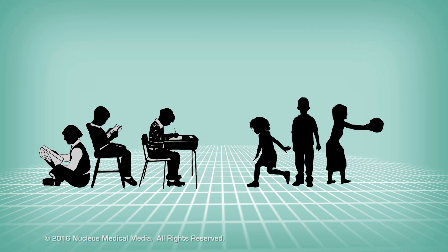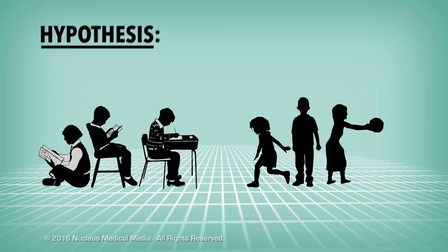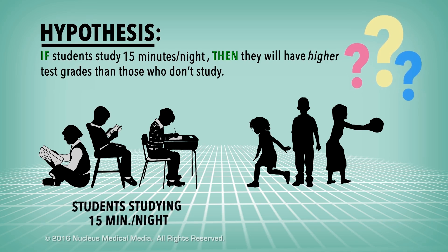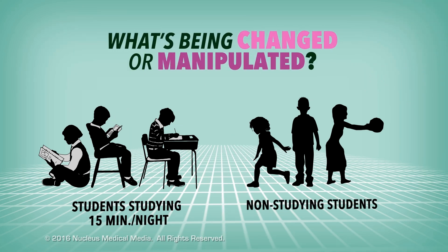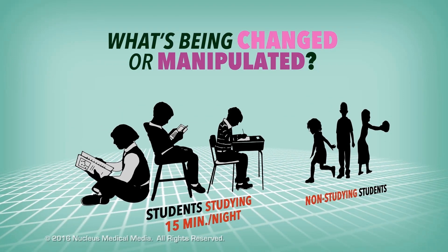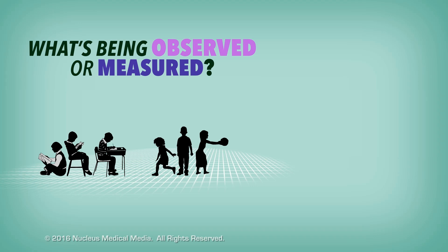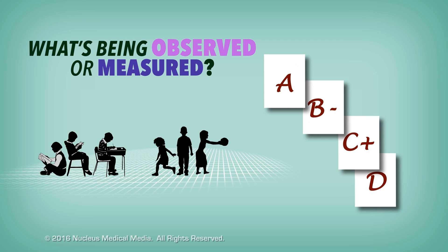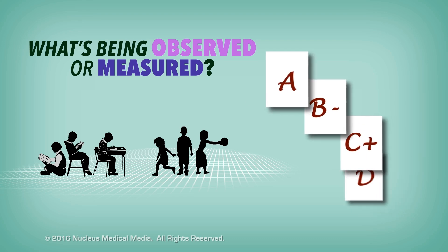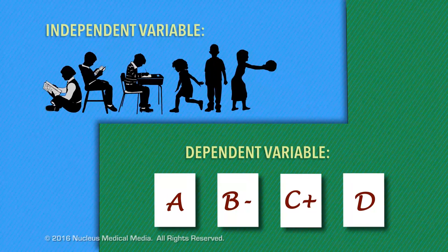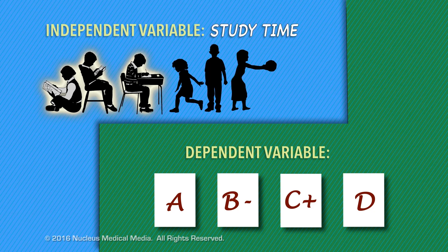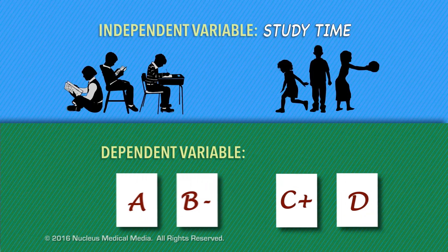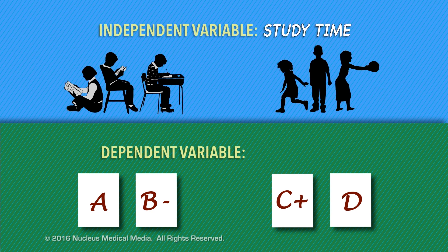Let's look at a few examples. Suppose your hypothesis is that if students study 15 minutes a night, then they will have higher test grades than those who don't study at all. What's being changed or manipulated? It's whether or not the students study for 15 minutes. What's going to be observed or measured? You're expecting test grades will be affected. In this experiment, the independent variable is the study time, and the dependent variable is the test grades.